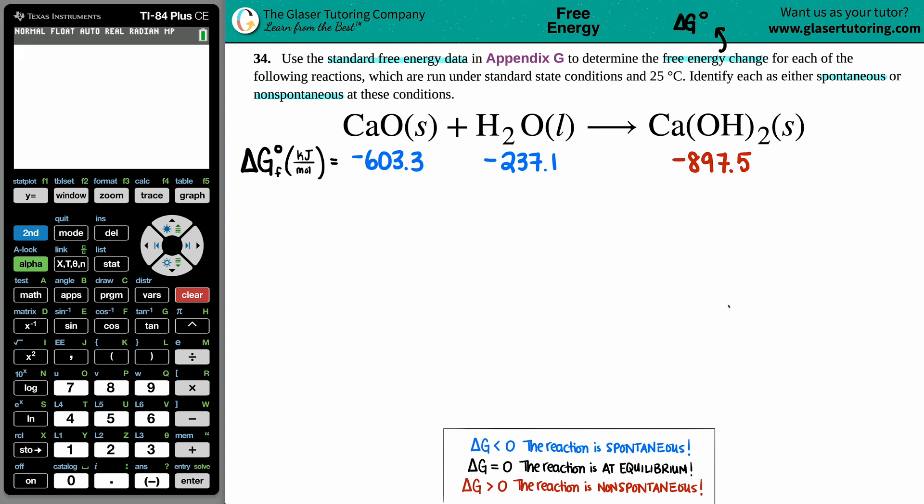Now if we have all delta G values and we want to find that change, the formula we're going to use is: delta G for the whole entire reaction is the sum—that's this little symbol here, sum a.k.a. addition—of all the products, the delta G of the products, minus the sum of all of the delta G reactants.